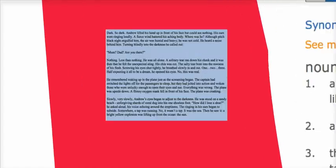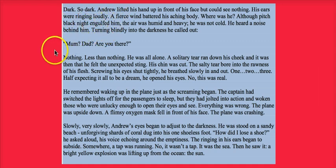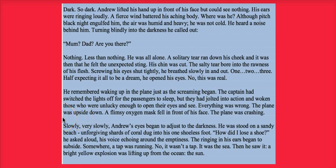Have your story taking place and then include a paragraph where it goes back in time — a flashback narrative structure. In my e-book at mrbrough.com, I've got an example of a story I've written, and here's a little section on screen. The idea is being on a desert island. We've got a paragraph of the character looking around, some dialogue, a description of what's happening, and then a flashback paragraph: 'He remembered waking up in the plane just as the screaming began. The captain had switched the lights off for the passengers to sleep, but they jolted into action.' That paragraph actually goes back in time.